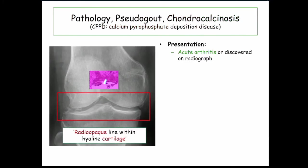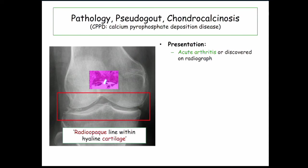They never ask about that. Big-ticket item: here are those calcium deposits in the cartilage seen on a radiograph — a radio-opaque line within the hyaline cartilage. That's similar to the radiolucency line in someone who has a pneumothorax. A radio-opaque line within cartilage is the only thing that's going to do that.